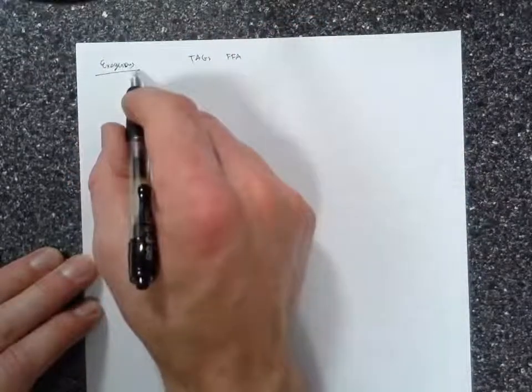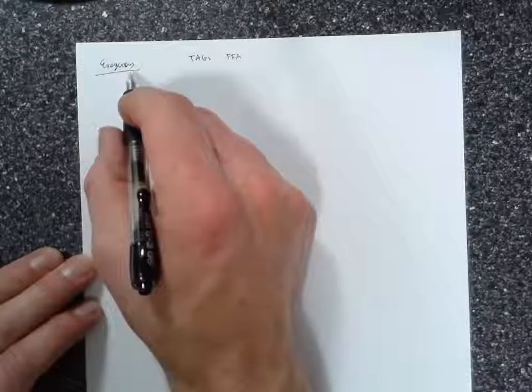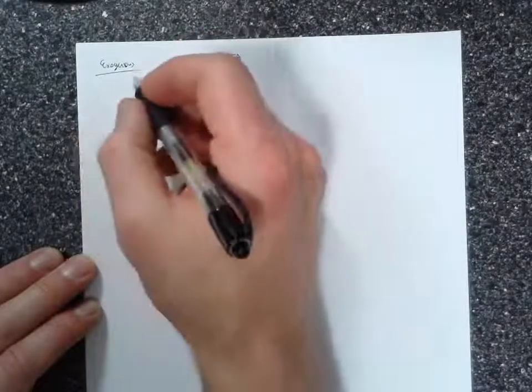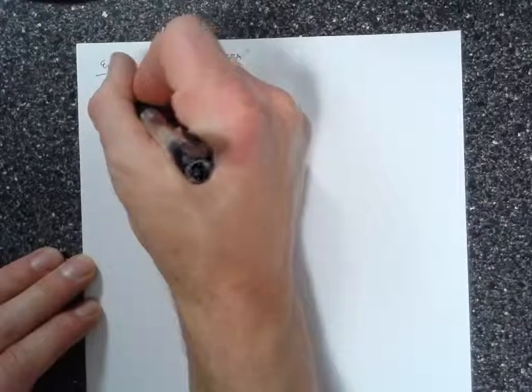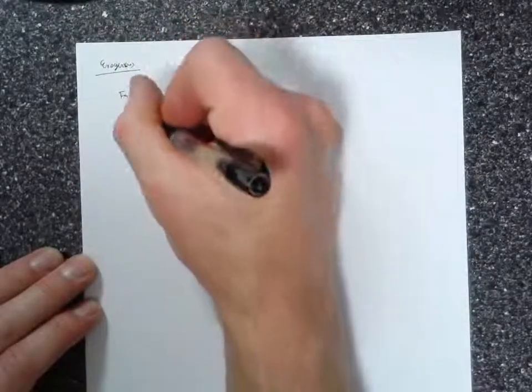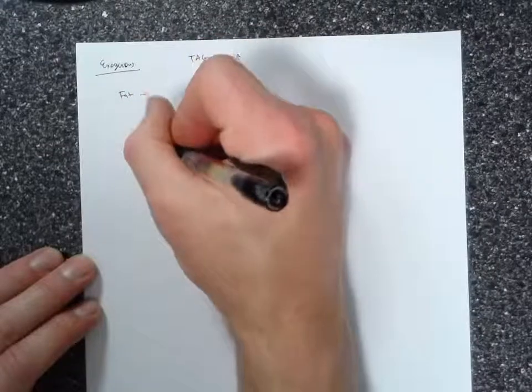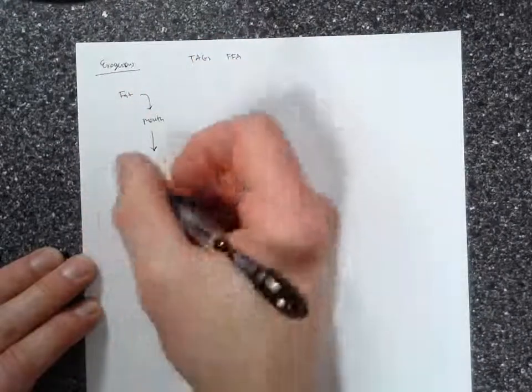So exogenous means from outside. So in this case it would be dietary fats. So fats are going to come in through the mouth and then from the mouth pass to the stomach.